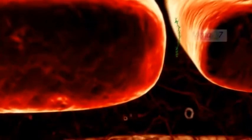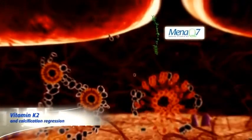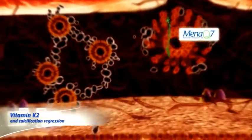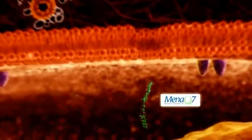The process of calcification is actively regulated by cells and proteins, and so is the blocking and regression of arterial calcification. Thus, vascular calcification is not an end-stage process. It can be stopped and may even be regressed.